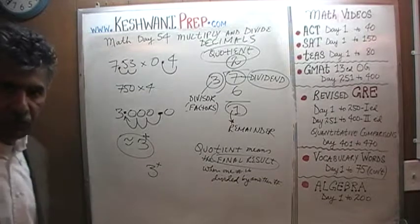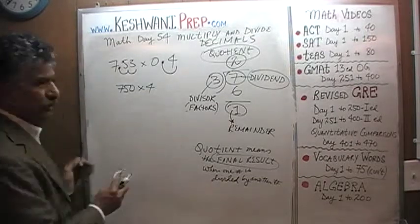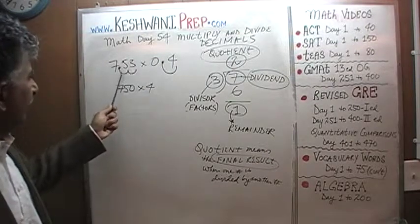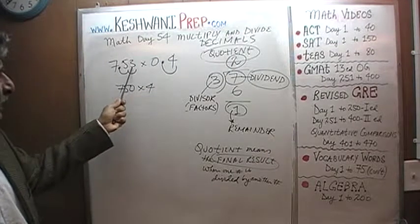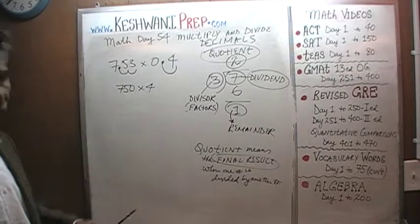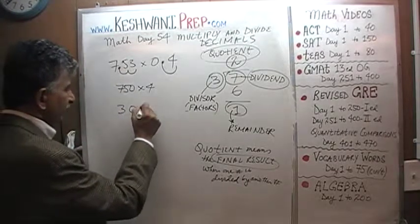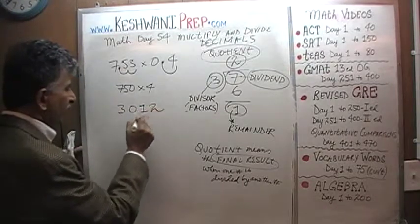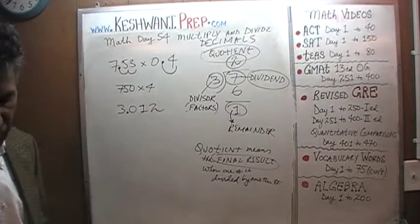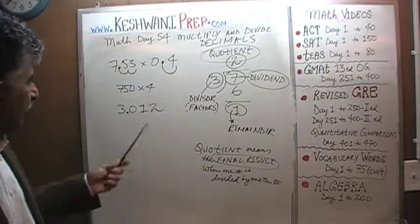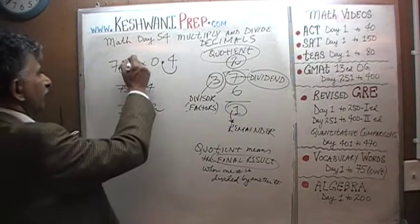Let's do the work and find the exact answer. We had 750 times 4. What we left out is 3 times 4, which is 12. So it's not going to be 3000 — it's going to be 3012. The answer is going to be 3.012. Because we left out the 12: three times four is twelve, that's the part we left out.